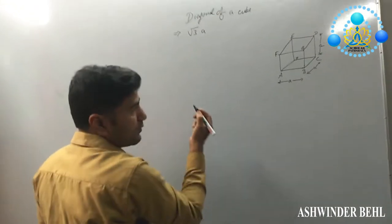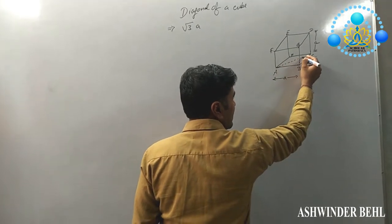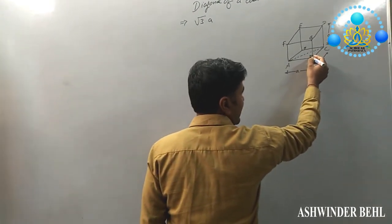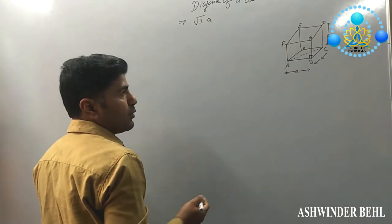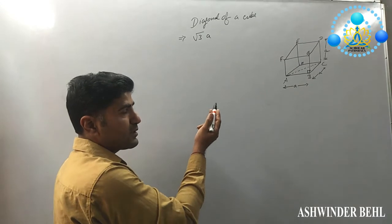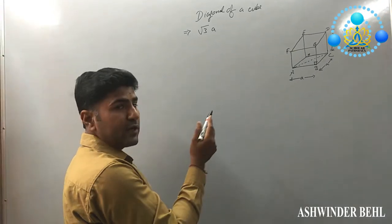Now how can we prove? So first of all we will join AC and angle B is 90 degrees. Because we know that the base of the cube is square and all angles in a square are 90 degrees.